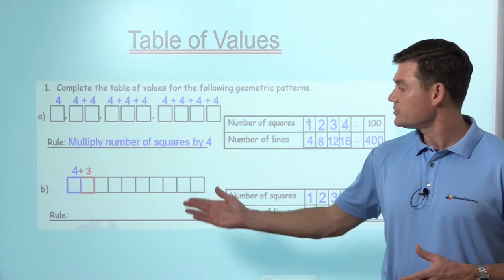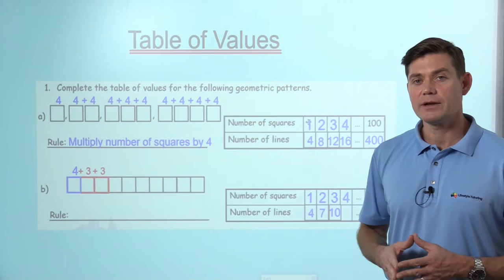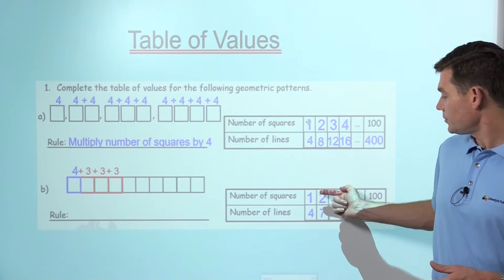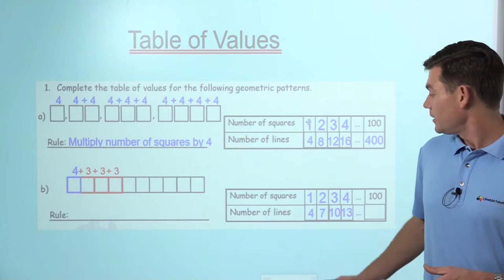How many lines am I going to add for two? As you can see, it's going to change. I only need three lines now to make two squares. If I want to add a third square, I only add three lines again and another square and other three lines.